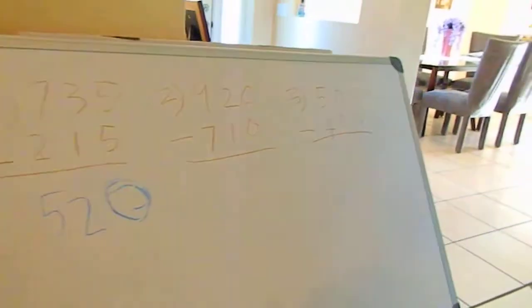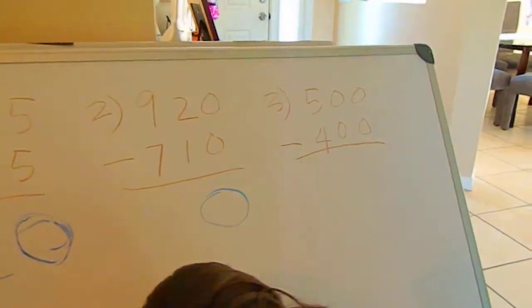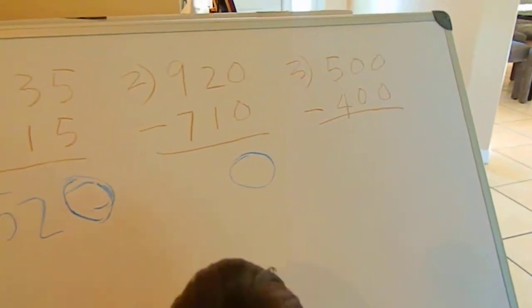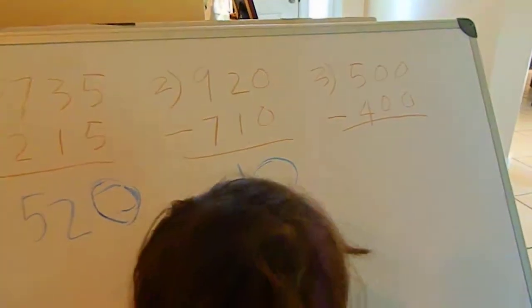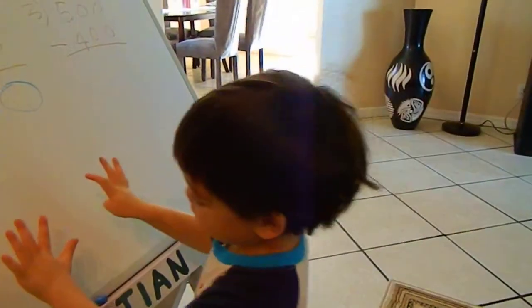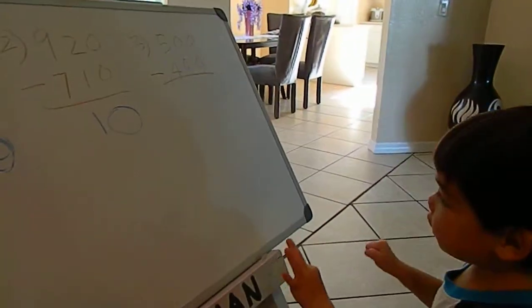Okay, number 2. 920 minus 710. Oh, this is 1. 9 minus 7. 9 minus 7 is.